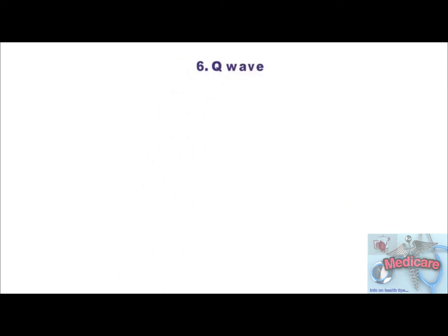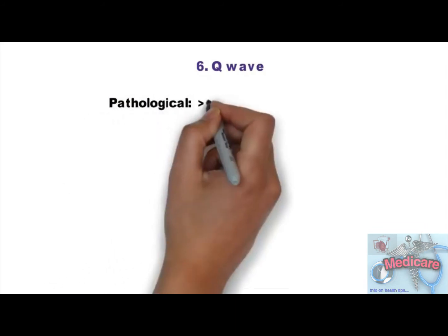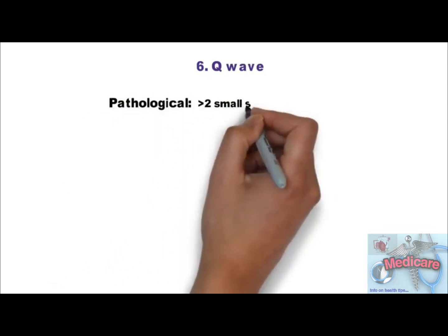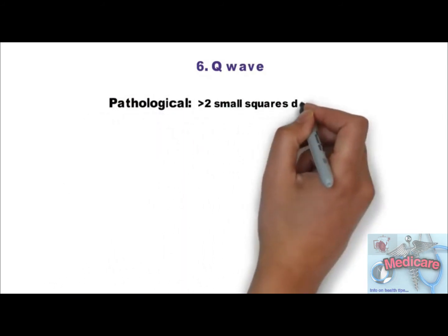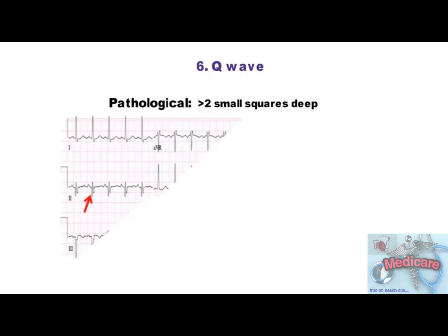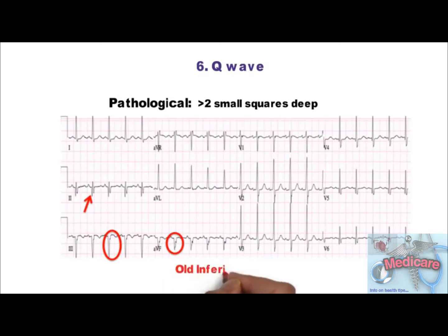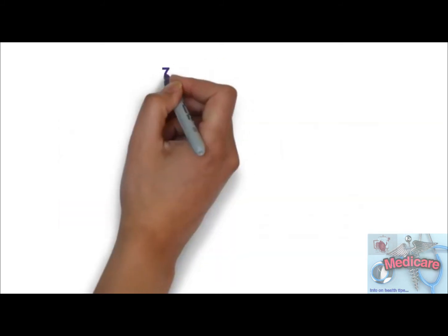Step 6 is Q wave. It is called pathological if more than 2 small squares deep, and usually indicates current or past MI. As you can see, deep Q waves in inferior leads 2, 3, and AVF — so this is the ECG of an old inferior wall MI.